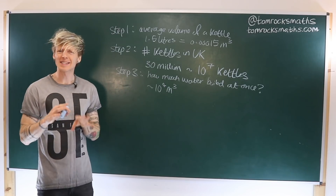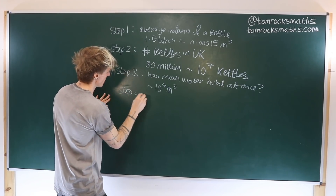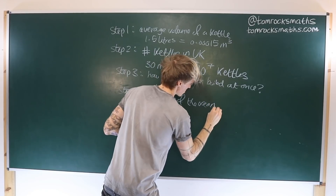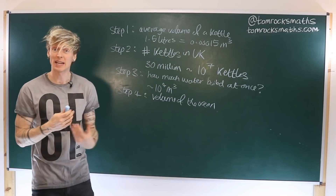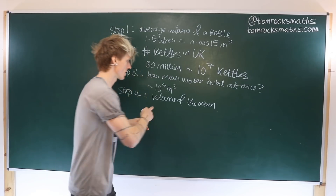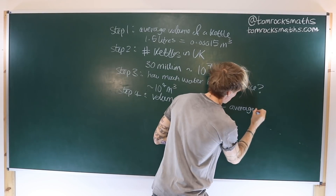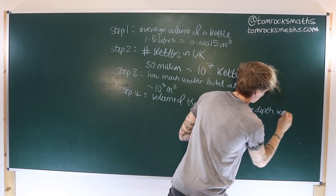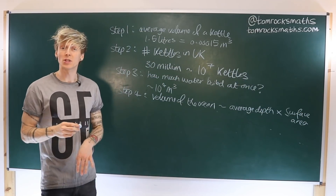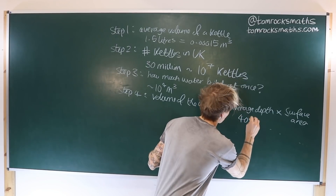Step four requires a little more work, because we want to know the approximate volume of the ocean. The volume of the ocean is approximately the average depth of the ocean multiplied by the surface area. The average depth of the ocean is around 4,000 metres.